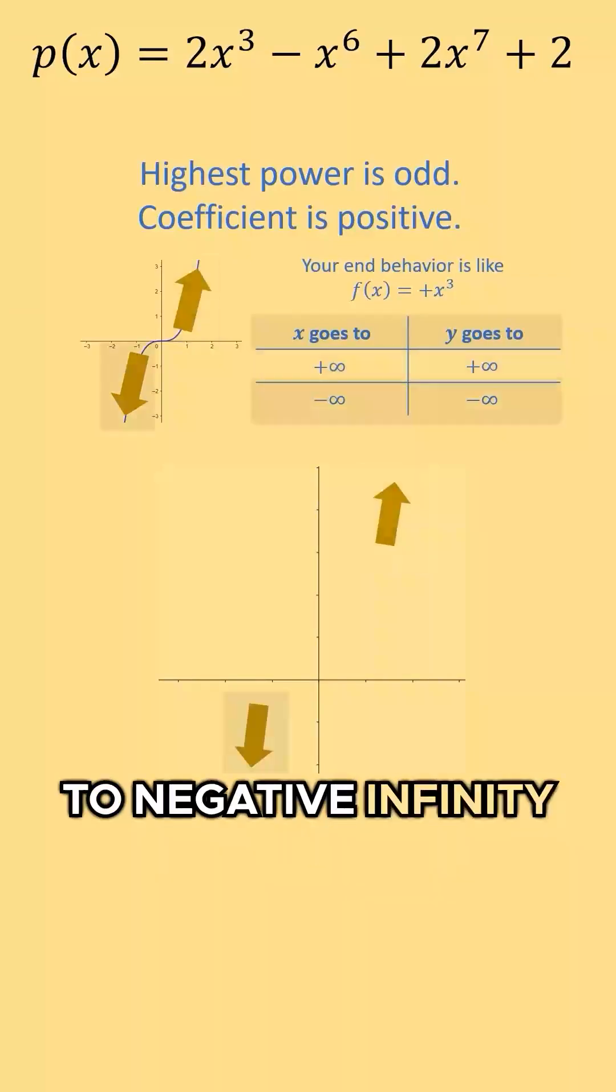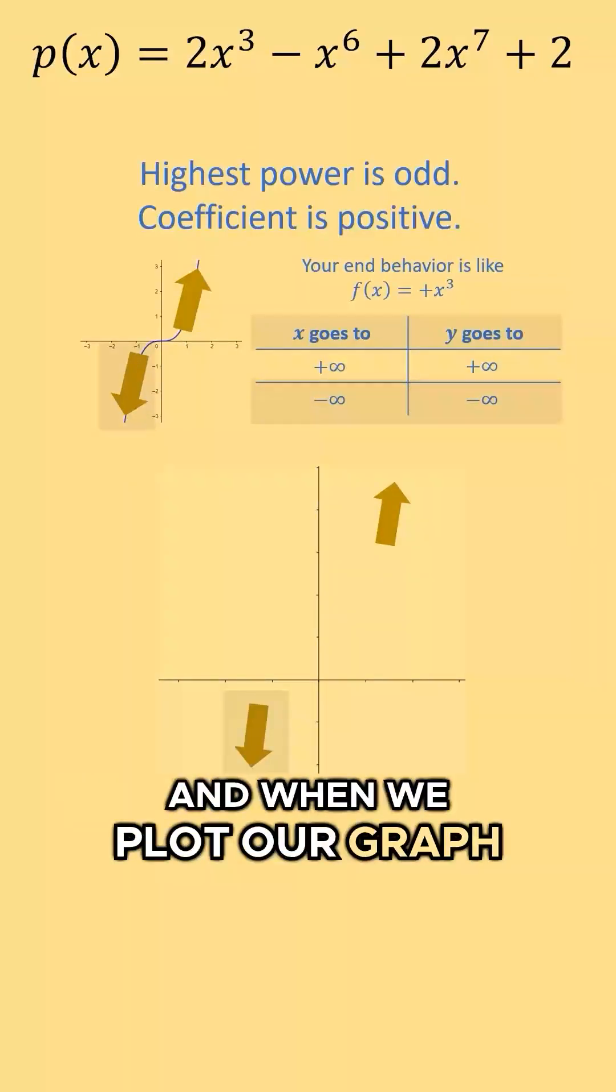And as x goes to negative infinity, y goes to negative infinity. When we plot our graph, it looks correct.